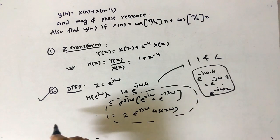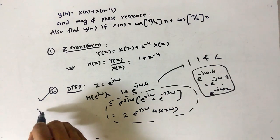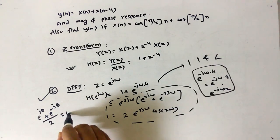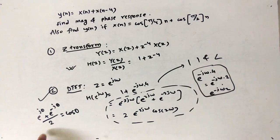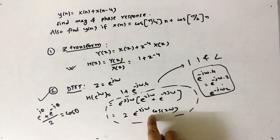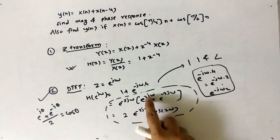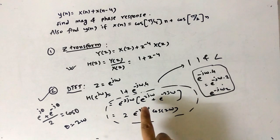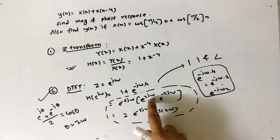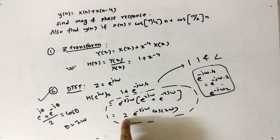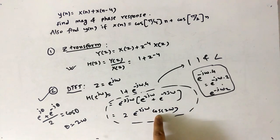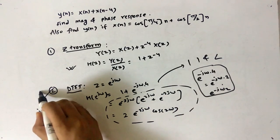We use the trigonometric formula: (e^(jθ) + e^(-jθ)) / 2 = cos(θ). In our case θ = 2ω. Multiplying and dividing by 2, the bracket e^(j2ω) + e^(-j2ω) becomes 2cos(2ω). This is a very important step — please take special care to note it.